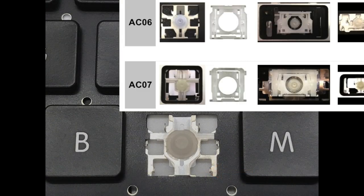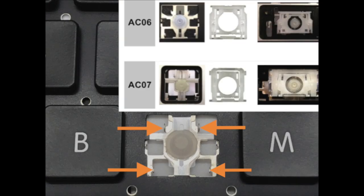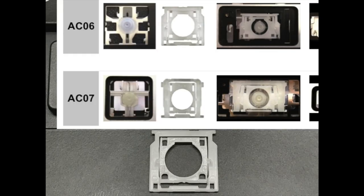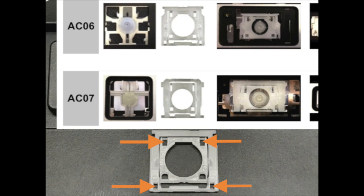Here is another example of matching using key type AC06. You can see the arrows pointing to the mounting points, which are in the same position as AC06 in the picture. You can also see here that the eyelets and the hinge for key type AC06 also match up with the example in the picture.